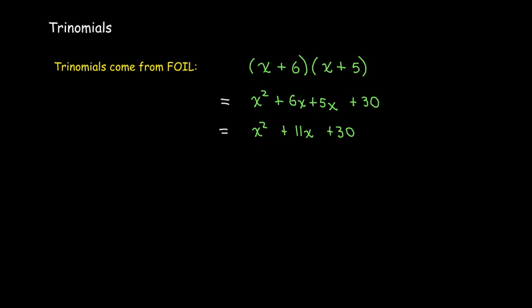So where do trinomials come from? They come from the product of binomials, using FOIL. If I take (x + 6)(x + 5), the four terms I get are x² + 6x + 5x + 30. And I can combine two like terms — that's how I wind up with a trinomial.